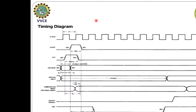Coming to the timing diagram of the ADC0809, the two important signals we need to concentrate on are: one is SOC, that is the start signal, and another one is end of conversion. There is an analog input which can come from any sensor like a temperature sensor, pressure sensor, or a potentiometer. The corresponding digital value will be outputted at the output latch.